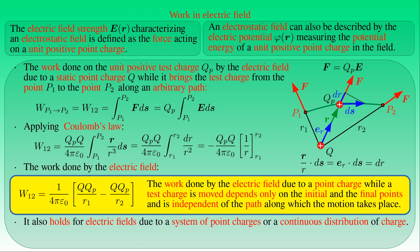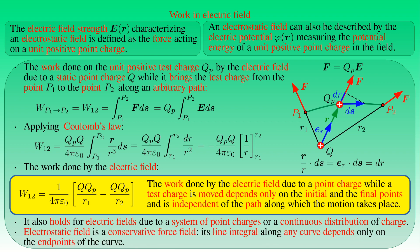If the work done by a force along an arbitrary path depends only on the initial and final points of the path, then the force is called conservative. Therefore, the electrostatic force is a conservative force.